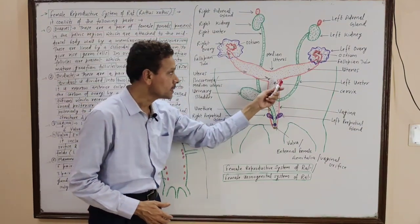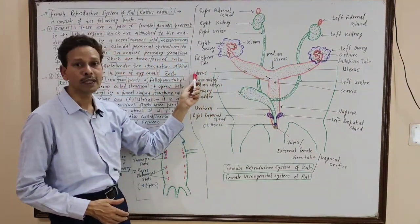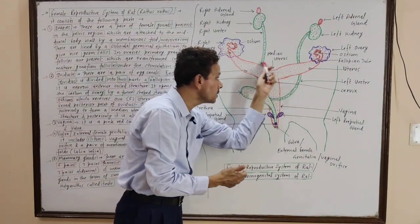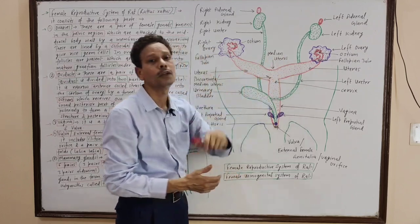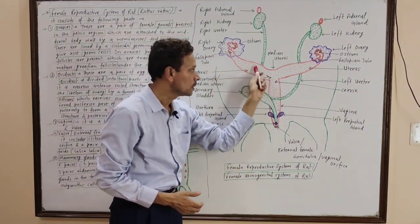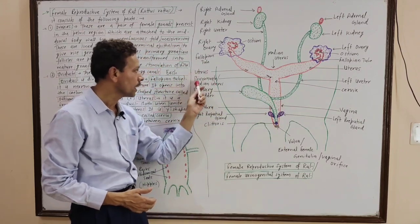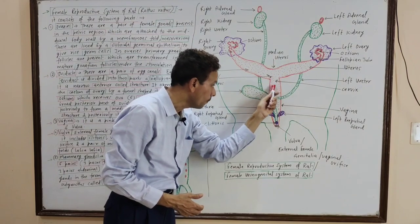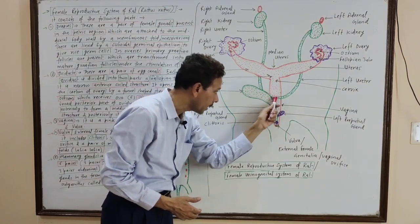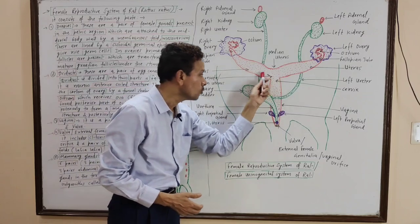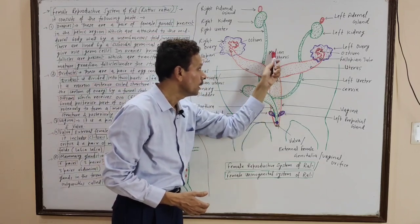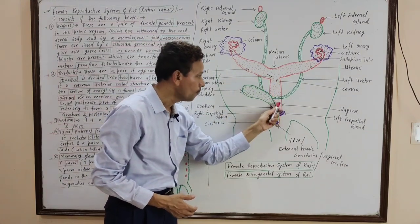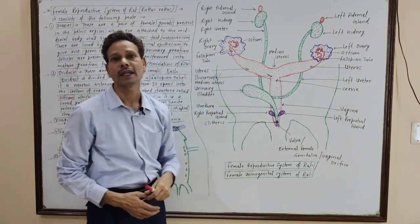Note down: the uterus of the right side and the uterus of the left side — both uteri unite in the middle part to produce a median uterus, which is almost a Y-shaped structure. It is named bicornuate. This median uterus opens into the canal which is the vagina, and the posterior part of the median uterus is the cervix. The uterus opens into the vagina through the cervix.